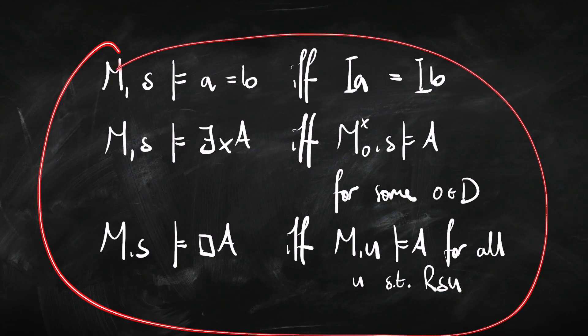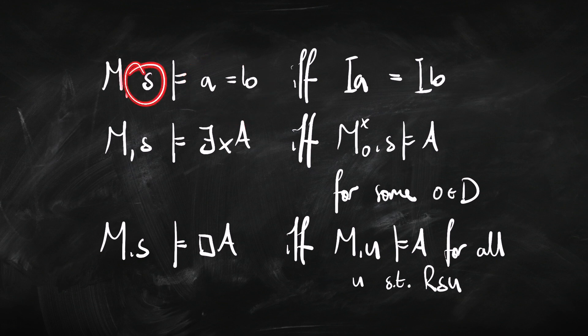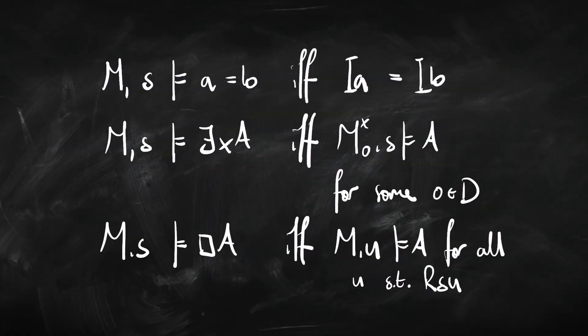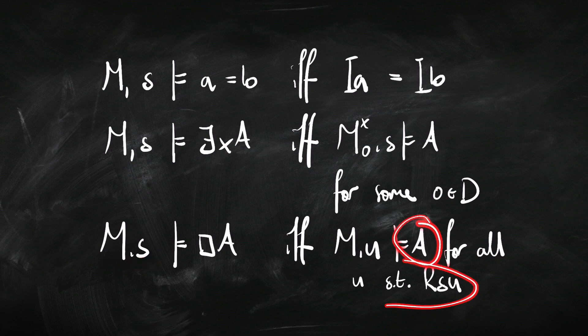So let's revise our semantics for identity, existence, and necessity. An identity statement is true at a possible world just in case whatever we interpret A as is the same thing that we interpret B as — if A and B are the same thing, that sentence is true regardless of what else happens at that state. Existence: 'there exists X, A' is going to be true in a model just in case in the variant model where we take the variable X and make it point at some object in the domain, that makes A come out true. Box A is going to be true at a world S just in case A is true at every accessible world.